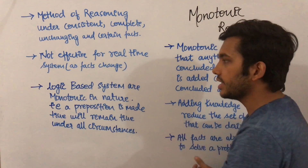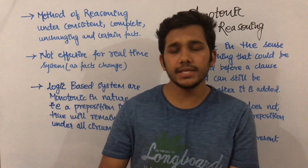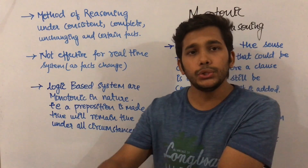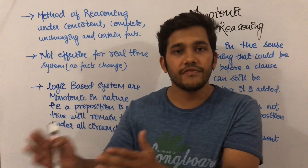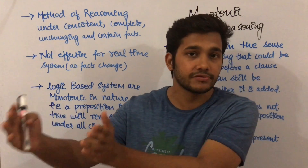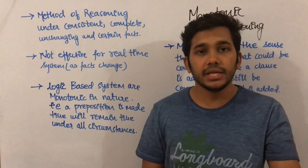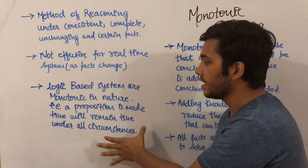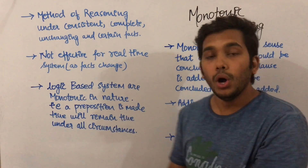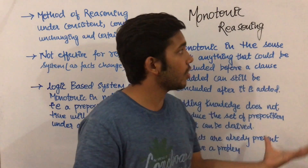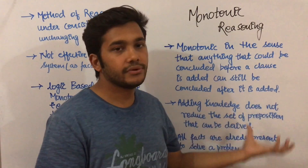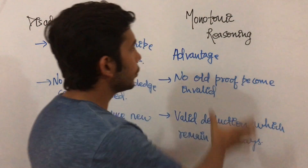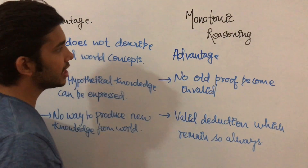Logic-based systems are monotonic in nature — that is, a proposition made true will remain true under all circumstances. So if I say Tarun Kumar got placed in Kent Aro, this clause will remain true whether I say he got placed with the help of his friend Anushka or that he got placed in an off-campus drive. A given clause will remain true under all circumstances.